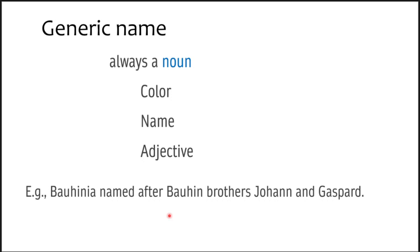Let us understand the different aspects of binomial nomenclature — specifically, what is the nature of the generic name, which is the first part. The very important aspect to remember is that the generic name will always be a noun. That is why, whenever we write the plant name, we start with a capital letter, because it is a rule in grammar that nouns begin with capital letters.